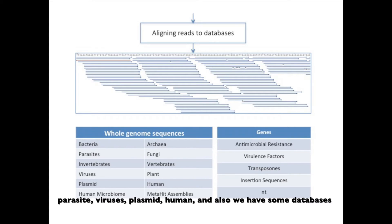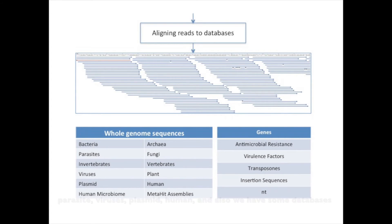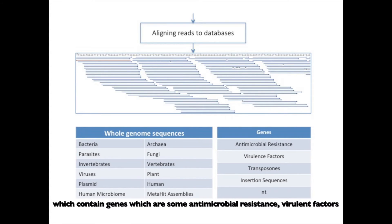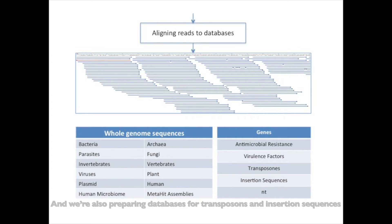We also have databases containing genes for antimicrobial resistance and virulence factors, and we are preparing databases for transposons and integron sequences. It is also possible to align sequences against the nucleotide database available from NCBI.